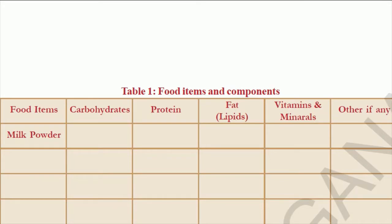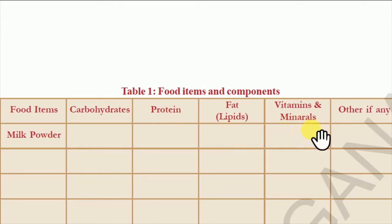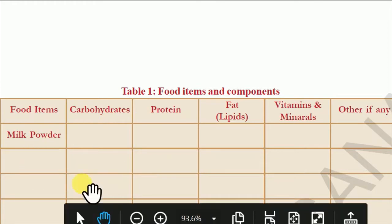Food: what we eat — this is most important for your seventh class, first chapter. Here you will find a big tabular column, Table 1, which is the first tabular column in the first chapter. It covers food components, and if you see the left side, you can find food items, carbohydrates, proteins, fats, vitamins, minerals, and other if any.